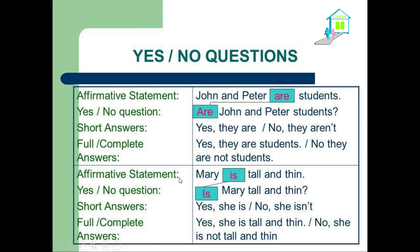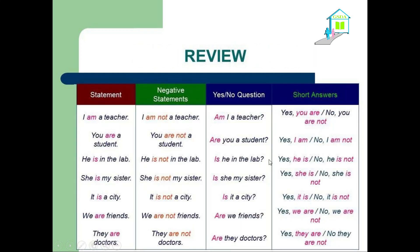Look at our second example: Mary is tall and thin — affirmative. Question: Is Mary tall and thin? And we can answer: yes, she is. Or no, she isn't. Here we have a brief review of our verb to be — we have seen the affirmative form, negative form, questions, and short answers.